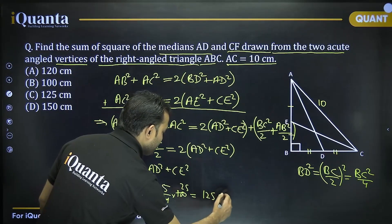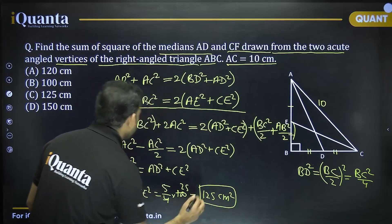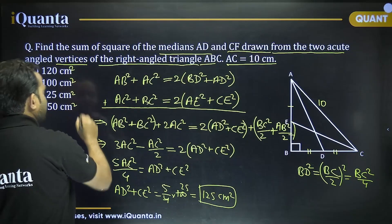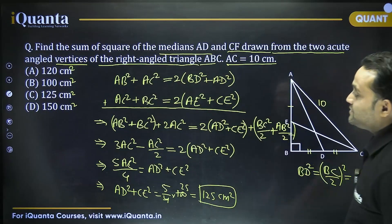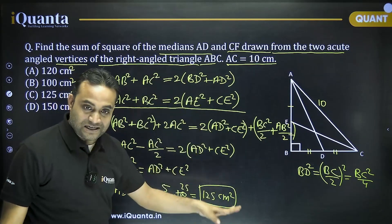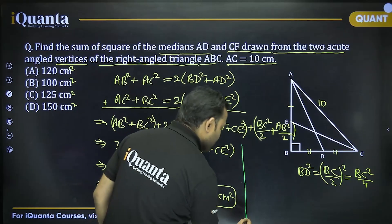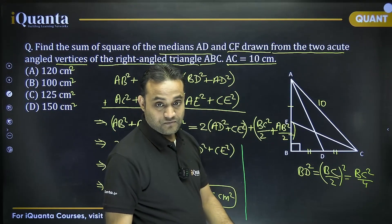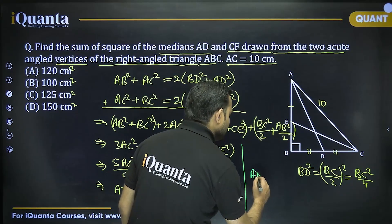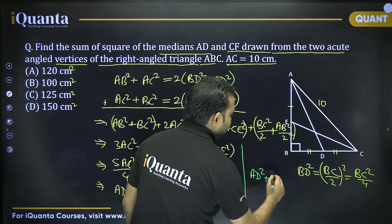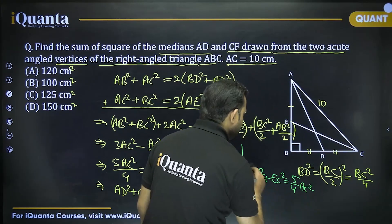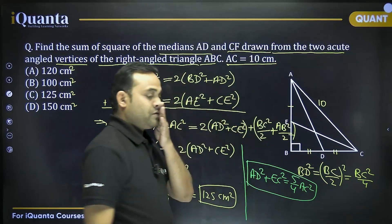Since AC = 10, AC² = 100. Therefore AD² + CE² = (5/4) × 100 = 125 cm². From next time, you can directly use this result: for medians drawn to acute angles in a right triangle, AD² + CE² = (5/4)AC².